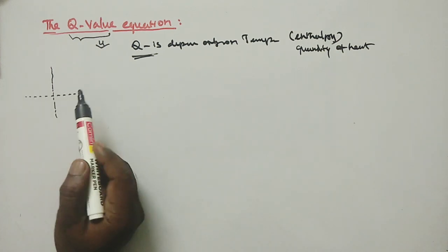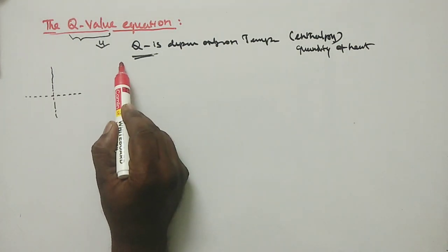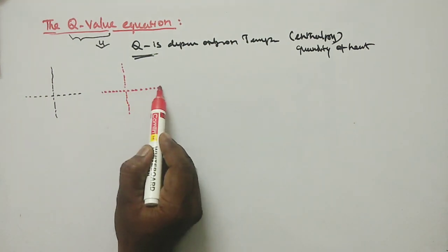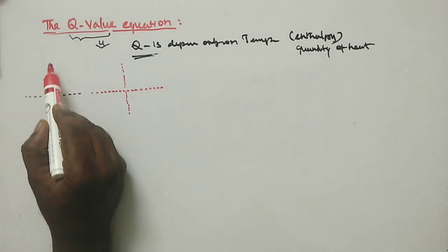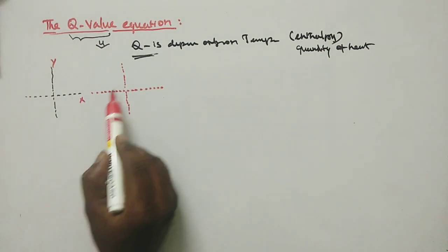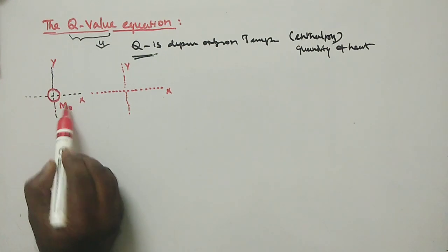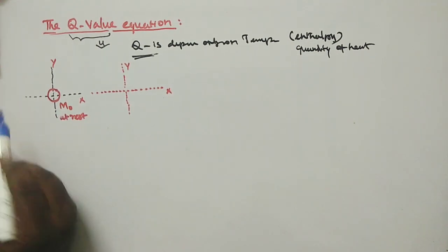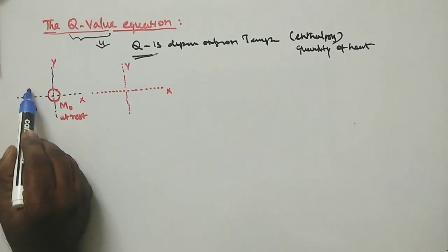I'll show you the diagram. This is the Y axis, this is the X axis. This is a nucleus at rest — mass M0, at rest. This is the incident particle, mass M1, velocity V1. This is before collision.